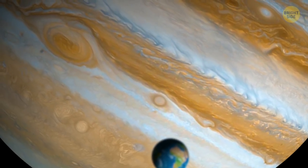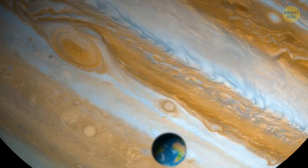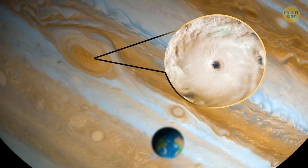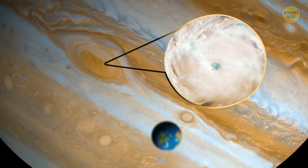There's a giant red spot on Jupiter that's bigger than Earth. Astronomers confirm that it's a perpetual storm that has been going on for centuries.